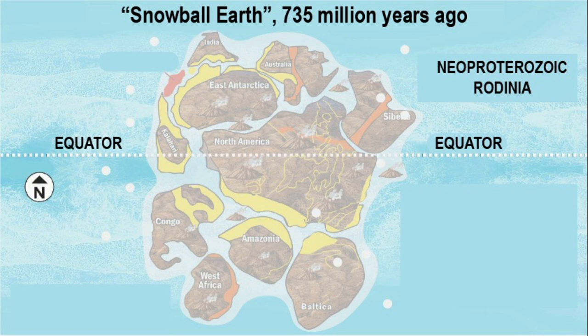What caused the Snowball Earth event? It couldn't be attributed to the drifting of the continental blocks to regions proximal to the south pole, since some paleomagnetic data suggest lower latitude — that is, near-equatorial coordinates — for the glaciated supercontinent Rodinia, about 635 million years ago.